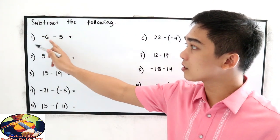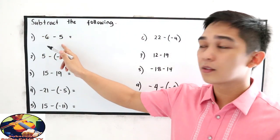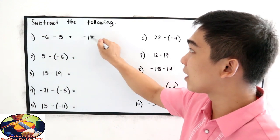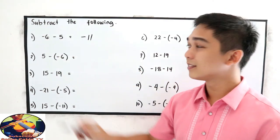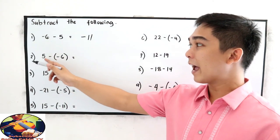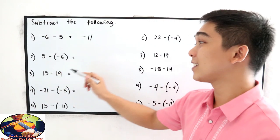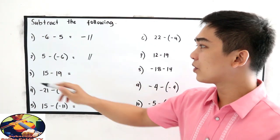Number 1, negative 6 minus 5, so this is negative 11. Number 2, 5 minus negative 6, that is 11.